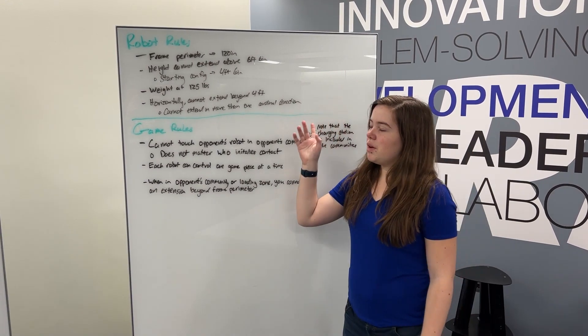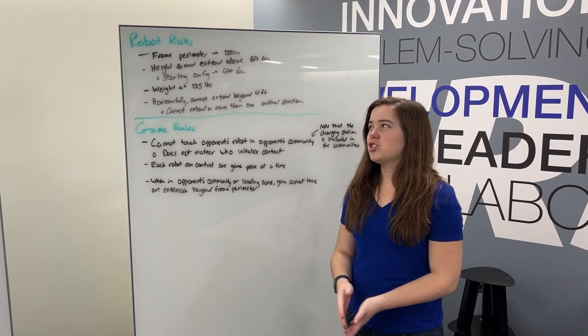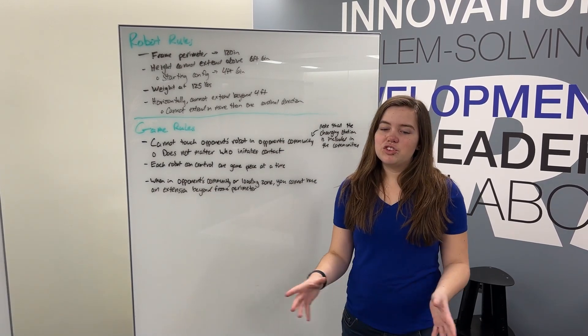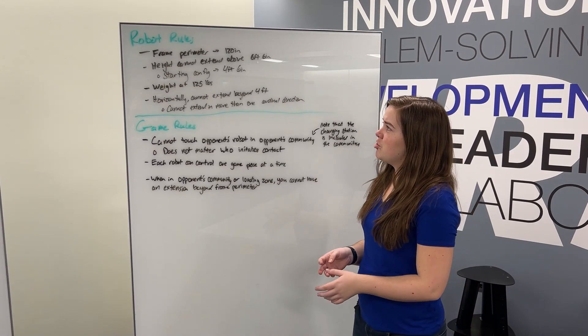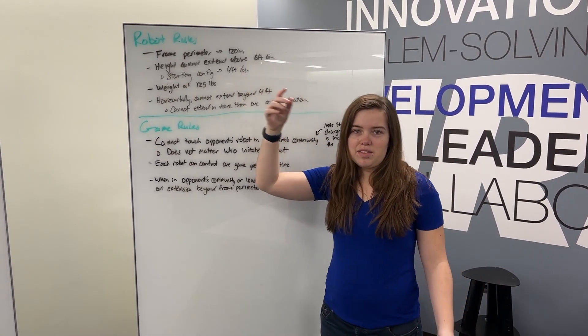So to start off, let's go over some of the basic robot rules, especially pertaining to the construction. The frame perimeter of the chassis is 120 inches, pretty standard, it's the same as last year. And the weight is at 125 pounds, again it's the same as last year.